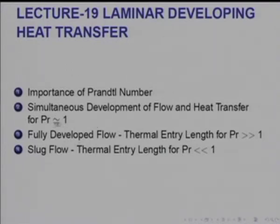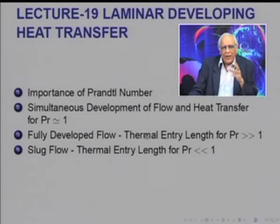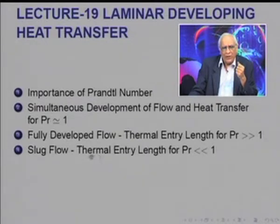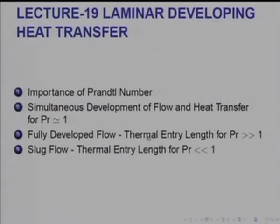That is the importance of Prandtl number in the study of laminar developing heat transfer. For Prandtl number close to 1, in a small range let us say from 0.5 to 10, one must consider both flow and heat transfer development simultaneously. When Prandtl number is very much greater than 1, then flow will be fully developed — we call it a thermal entry length problem because the velocity is specified. Likewise, when Prandtl number is very much less than 1, u will be specified at the inlet value u, and it is almost like a piston or slug flow thermal entry length problem. So we will consider these cases separately.